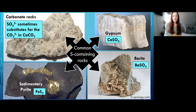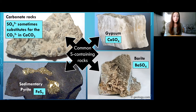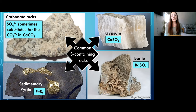We need both sulfides and sulfates as proxies because we need to distinguish between them. The other sulfur-containing rocks are sulfates like barite, gypsum, and carbonate rocks. Carbonate rocks are calcium carbonate — you might wonder where the sulfur is, but sometimes sulfate ions can substitute for the carbonate ions in calcium carbonate rocks. So we can measure isotopes of sulfur within carbonate rocks, though it's not as abundant as in gypsum or barite sulfate.